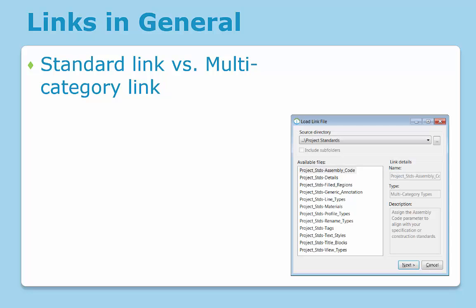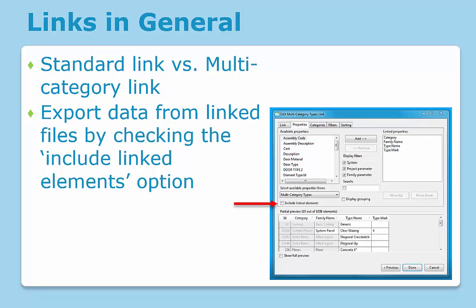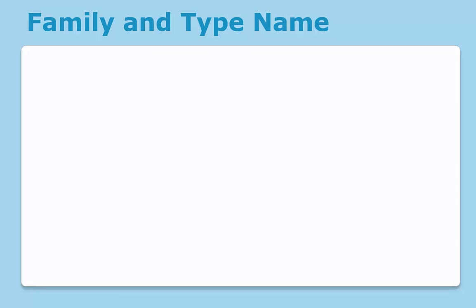But there are a few links, however, such as those for assembly code and renaming types, which are multi-category links and show data across multiple categories. Also in ID8 VimLink, you may export information from linked Revit files by checking the include linked elements option as shown on the image to the right.